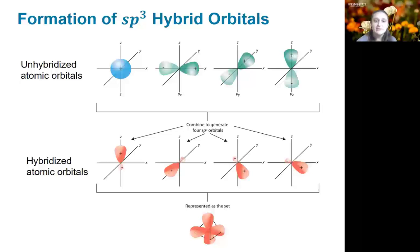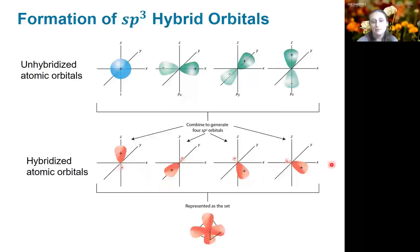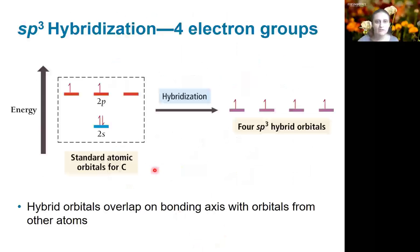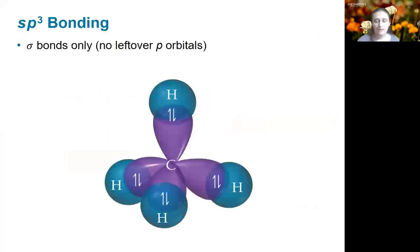We've already seen the case where you mix the s orbital with all three p orbitals, but just to quickly revisit it: this is the formation of sp3 hybrid orbitals, where we mix one s orbital and three p orbitals together to get four new hybrid orbitals. The four hybrid orbitals point at the corners of a tetrahedron, which is how they can get as far apart from each other as possible. When we mix all four of these orbitals together, we get four new orbitals of equal energy.